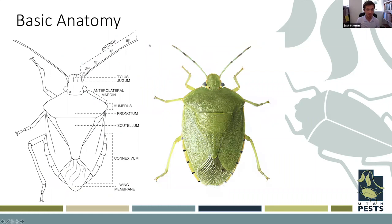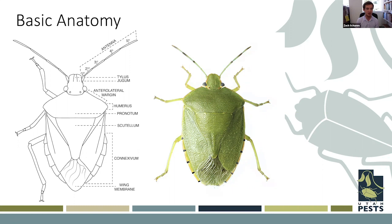Looking at the basic anatomy of the stink bug, there are a couple of things to pay attention to. Being in family Pentatomidae, stink bugs are almost perfectly shield-shaped with five main sides. You can use that to identify stink bugs most of the time. The actual reason they're called Pentatomidae is that their antennae are five-segmented. This can be hard to see in the field, but with a magnifying glass you can count the five antenna segments.